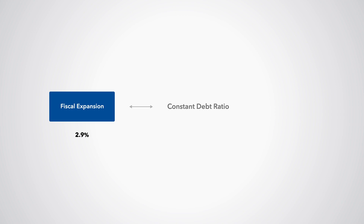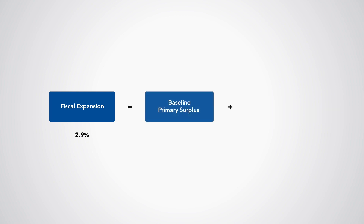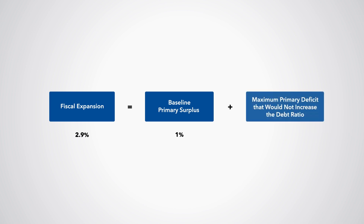This expansion is the sum of the baseline primary surplus of 1% that could be eliminated, and the primary deficit of 1.9% the government could have without increasing the debt ratio.